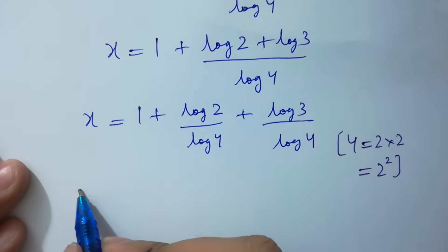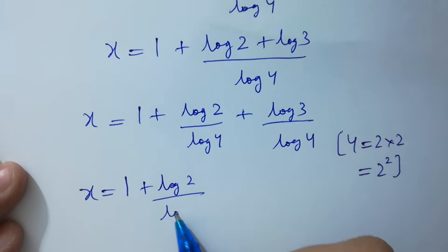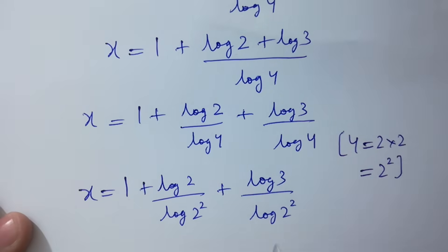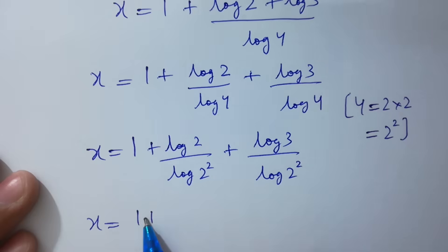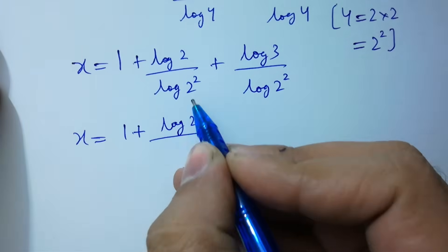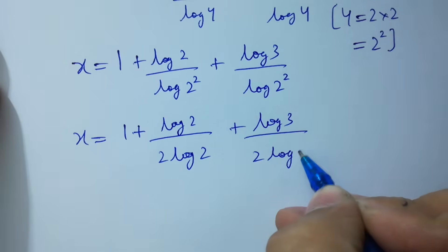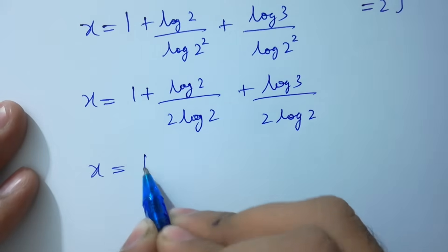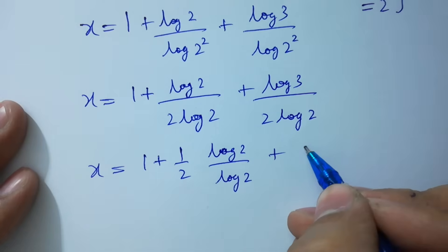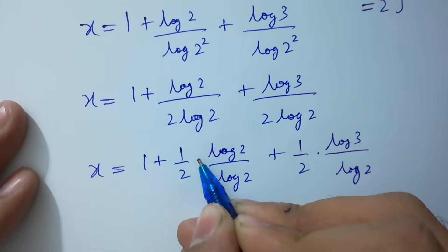x equals 1 plus log 2 over log(2 squared) plus log 3 over log(2 squared). x equals 1 plus log 2 over 2 log 2 plus log 3 over 2 log 2. x equals 1 plus log 2 over log 2 plus log 3 over log 2, and log 2 and log 2 cancel.